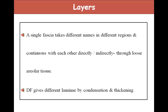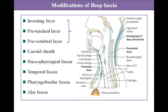Layers of the deep cervical fascia: a single fascia takes different names in different regions and continues with each other directly or indirectly through the loose areolar tissue. Modifications of the deep cervical fascia are: investing layer, pre-tracheal layer, pre-vertebral layer, carotid sheath, buccopharyngeal fascia, temporal fascia, pharyngobasilar fascia, and alar fascia. The most important are the investing layer, pre-tracheal layer, pre-vertebral layer, and the carotid sheath.